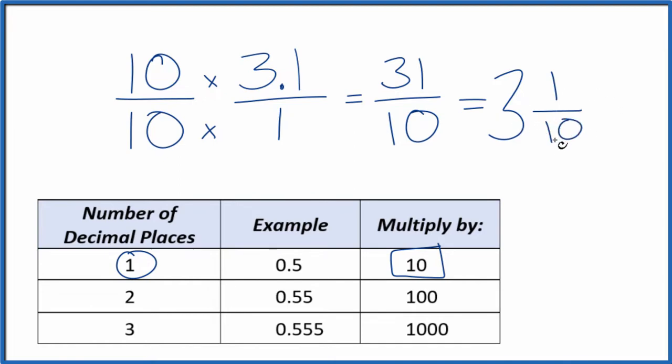You can check that. 3 times 10 is 30, plus 1 is 31. So 31 tenths. So we've converted the number 3.1 to both an improper fraction and then a mixed fraction.